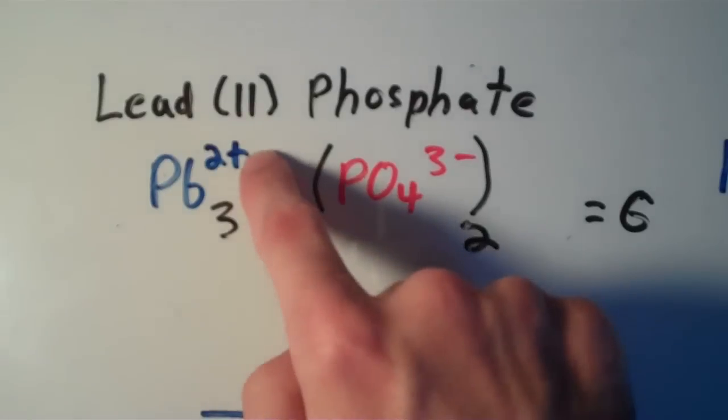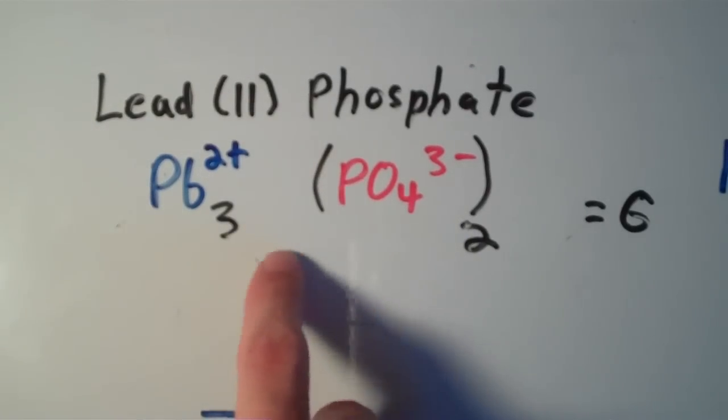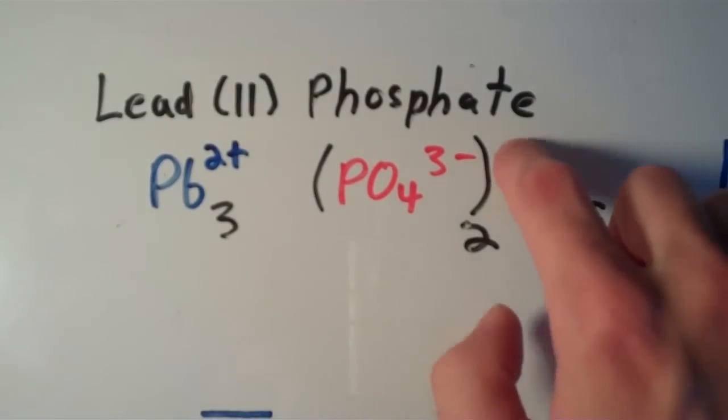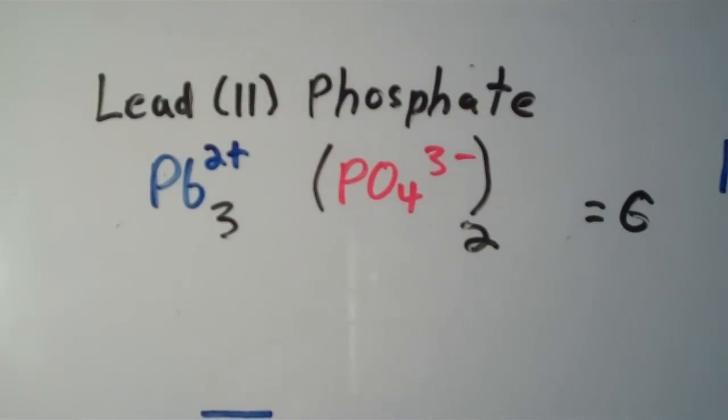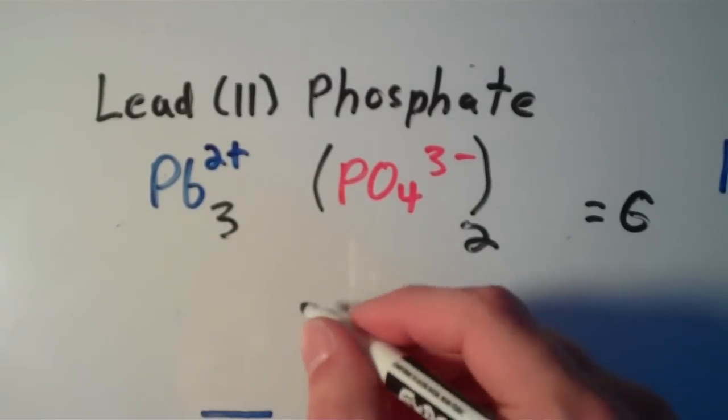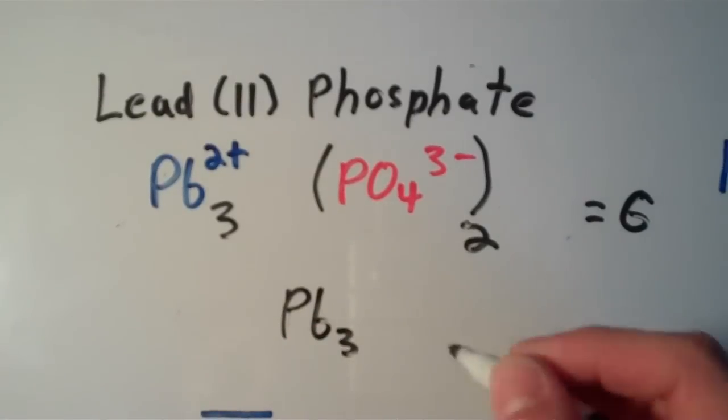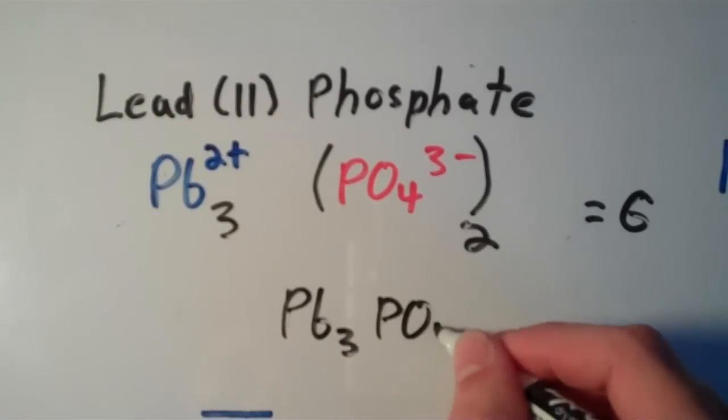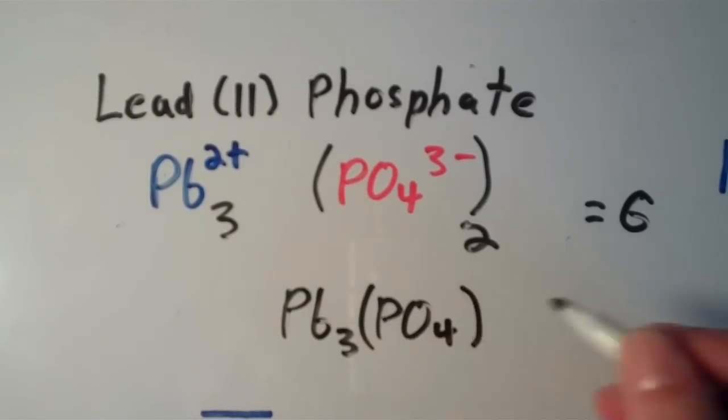So we have a +2 times 3, that's equal to 6, +6 that is. And then we have a -3 times 2, that's just going to be -6. If we add the +6 and the -6 together, then we will get 0. So our final formula is going to be Pb3(PO4)2. So there you go, that is how to write formulas for ionic compounds.